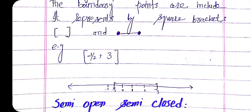One important thing to notice about intervals: the starting point of each interval is always less than or equal to the endpoint of the interval. The first point is called the initial point, and the second point is called the terminal point.